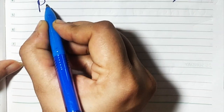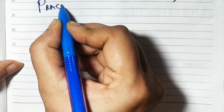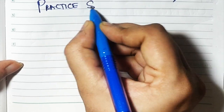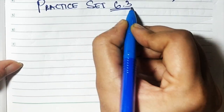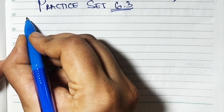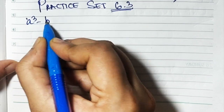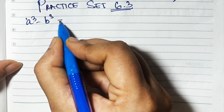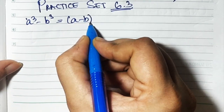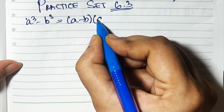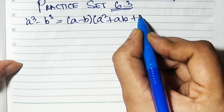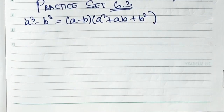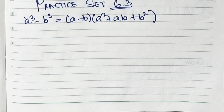Now we will do practice set 6.3. The formula we are going to use here is a cube minus b cube, which is equal to a minus b, times a square plus ab plus b square. We are going to use this formula to solve the sums.